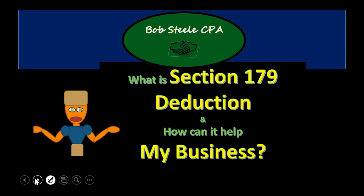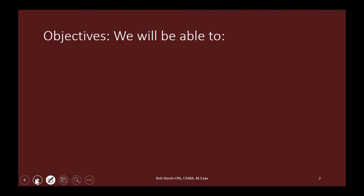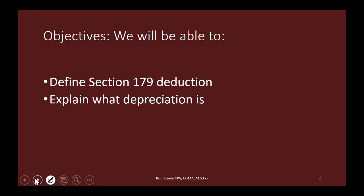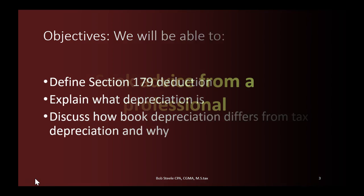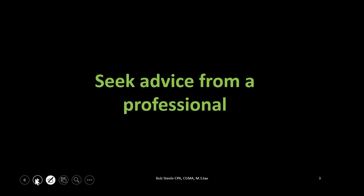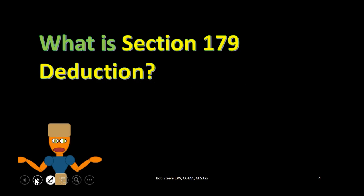Hello. In this lecture we're going to talk about the section 179 deduction — what it is and how it could help your business. At the end of this we will be able to define the section 179 deduction, explain what depreciation is, and discuss how book depreciation differs from tax depreciation and why. First, we do want to seek advice from a professional when talking about the tax code and depreciation, as well as bookkeeping and accounting in general.